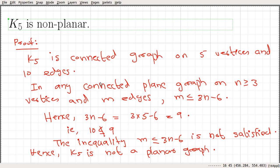We used the statement: in any connected plane graph on n vertices and m edges, where n is greater than or equal to three, m is less than or equal to three n minus six. K5 has five vertices and ten edges, so three n minus six is nine. Since ten is not less than or equal to nine, K5 is not a planar graph.